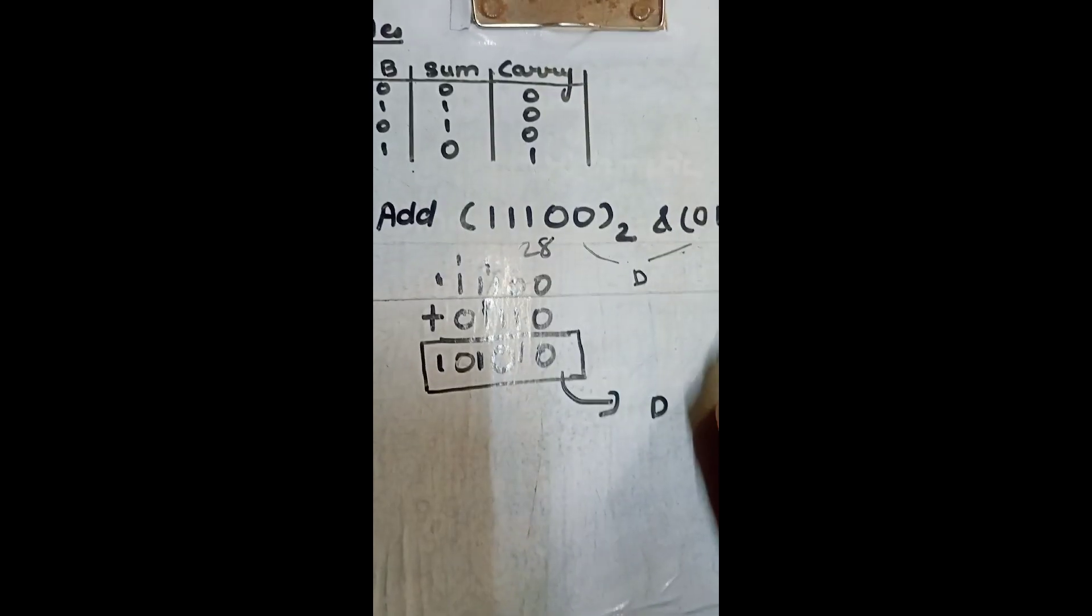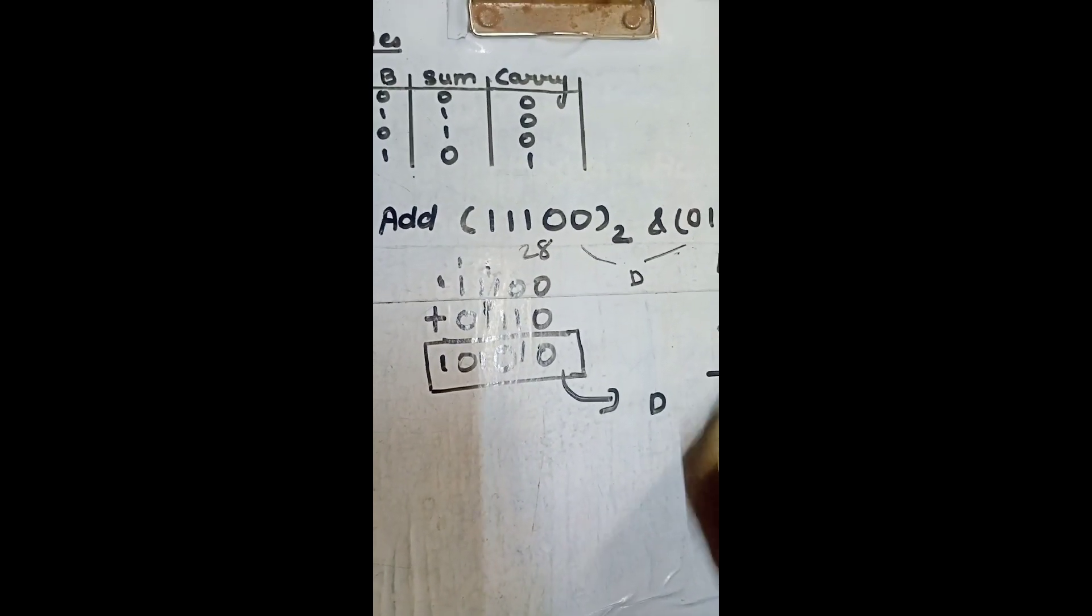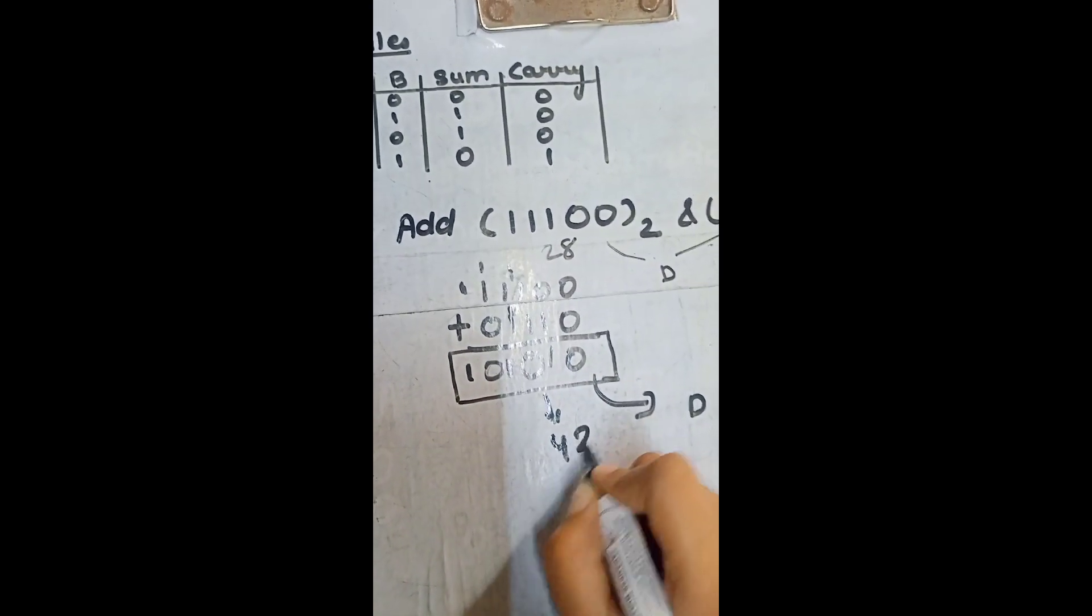this number in decimal is 28 and this is 14. And you know, 28 plus 14 is 42. This number is 42. This number is also 42.